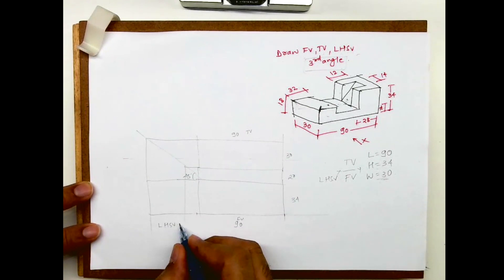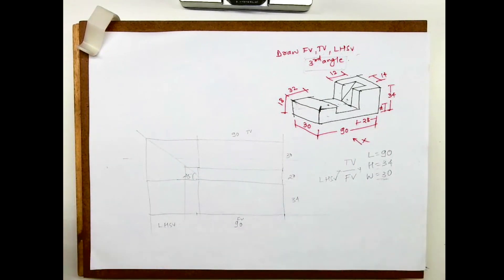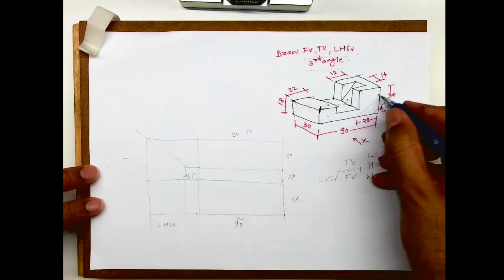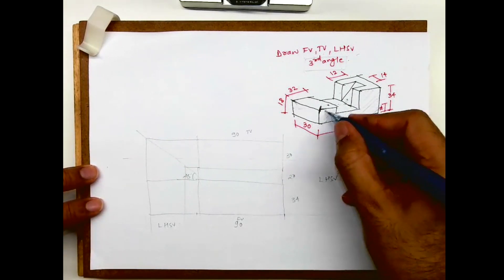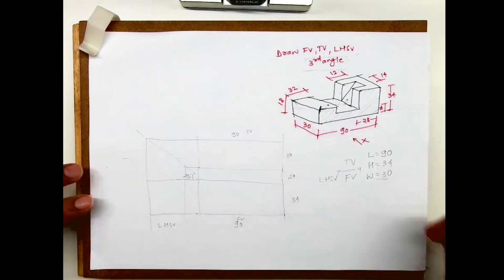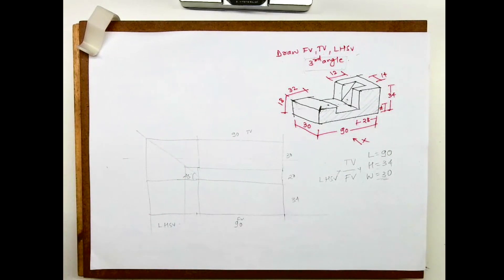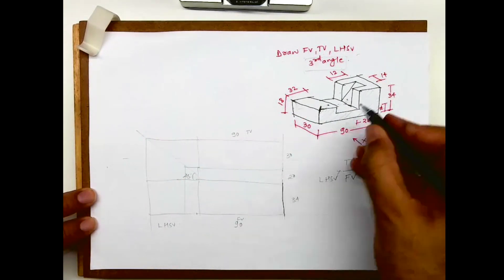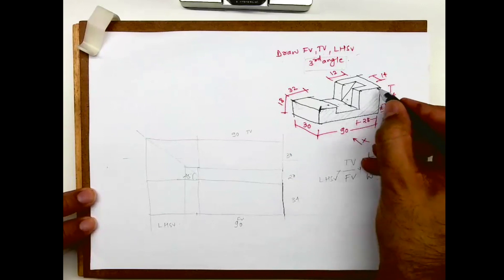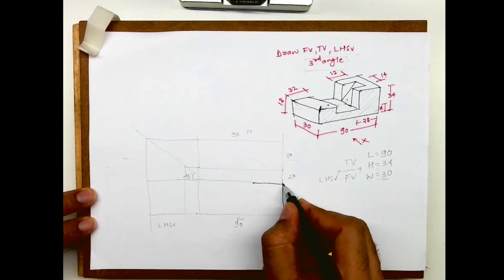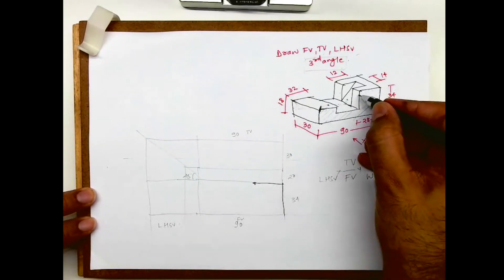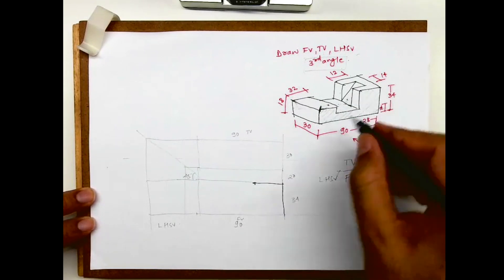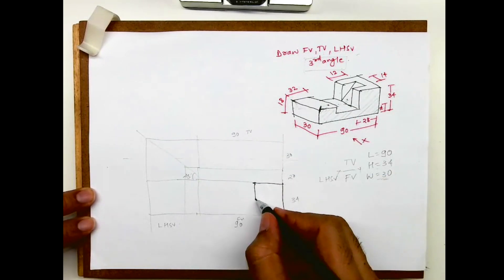Now I need to draw the front view. When I see from the front, I see this part. This dimension is 34. So this is 34, and I have to take 28. Then I come down — this is 34 minus 14, so I go down by 20.